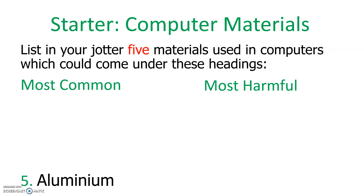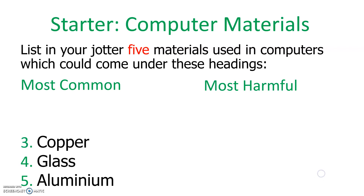You'll know that from cans and stuff, but aluminium is also used as part of the computer system. The fourth most commonly used material is glass — obviously in things like the screen, but also used as part of the motherboard. Third is copper, which is really important because it's built into the motherboard and all the wires inside your computer and your charging cables are made of copper — very good for transmitting electricity.